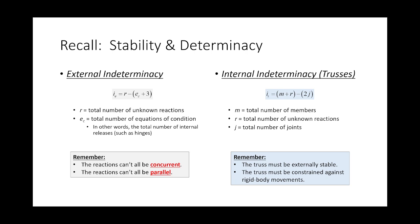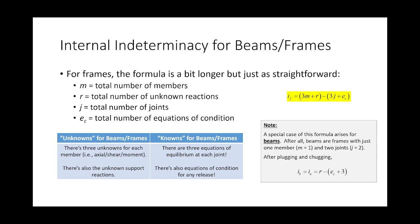We also covered internal indeterminacy of trusses: I_T = M + R − 2J, where M is members, R is reactions, and J is joints. In both the truss and external indeterminacy formulas, I equals unknowns minus knowns. For trusses, M + R are the unknowns and 2J are the known equilibrium equations (sum Fx = 0 and sum Fy = 0 per joint).